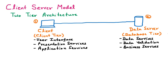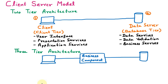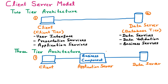Now we move to the three-tier architecture. In the three-tier architecture we have three components: the client, the application server, and the data server. Comparing with the two-tier architecture, there is one extra component — the business component — which is why it is called the three-tier architecture.